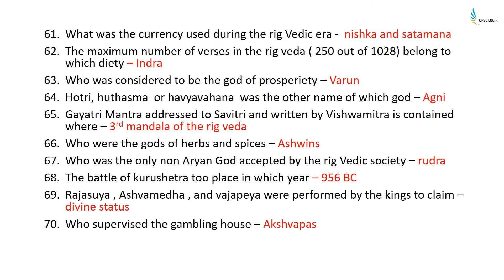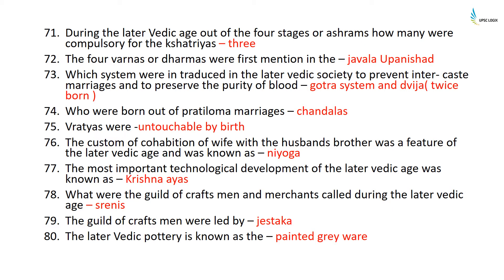Rajsuya, Ashvamedha, and Vajapeya were performed by kings to claim a divine status. The gambling houses were supervised by the Akshavapa. During the later Vedic age, out of the four stages or ashramas, three were compulsory for Kshatriyas. For Vaishyas, it was two, and for Shudras, it was none.